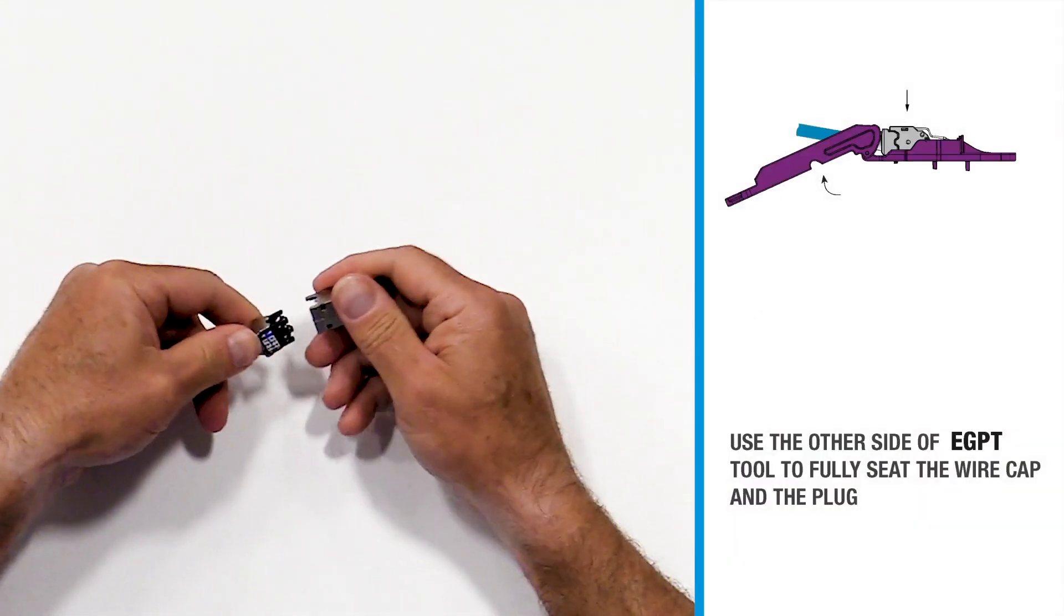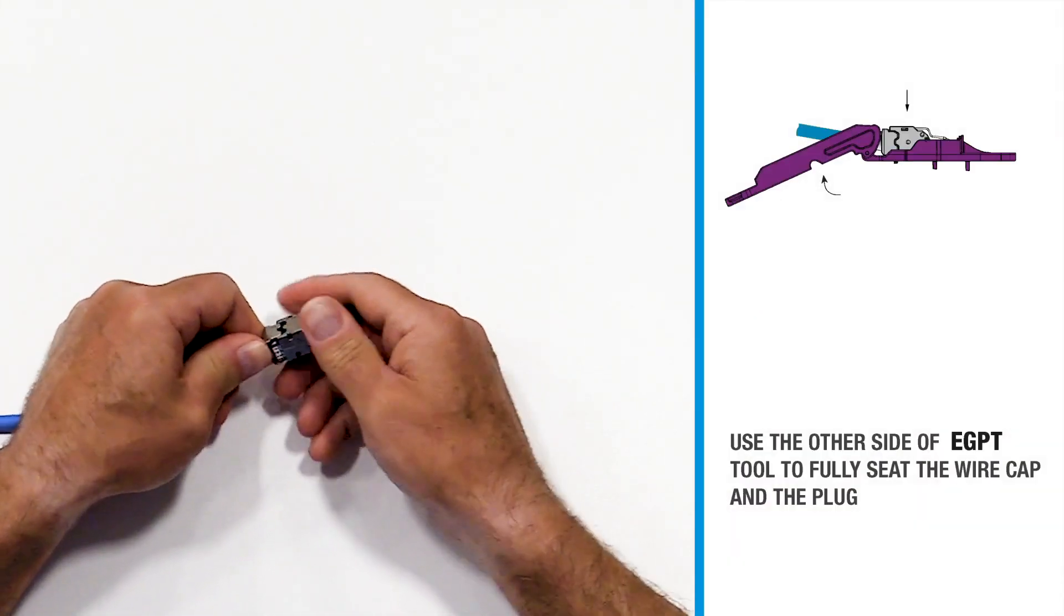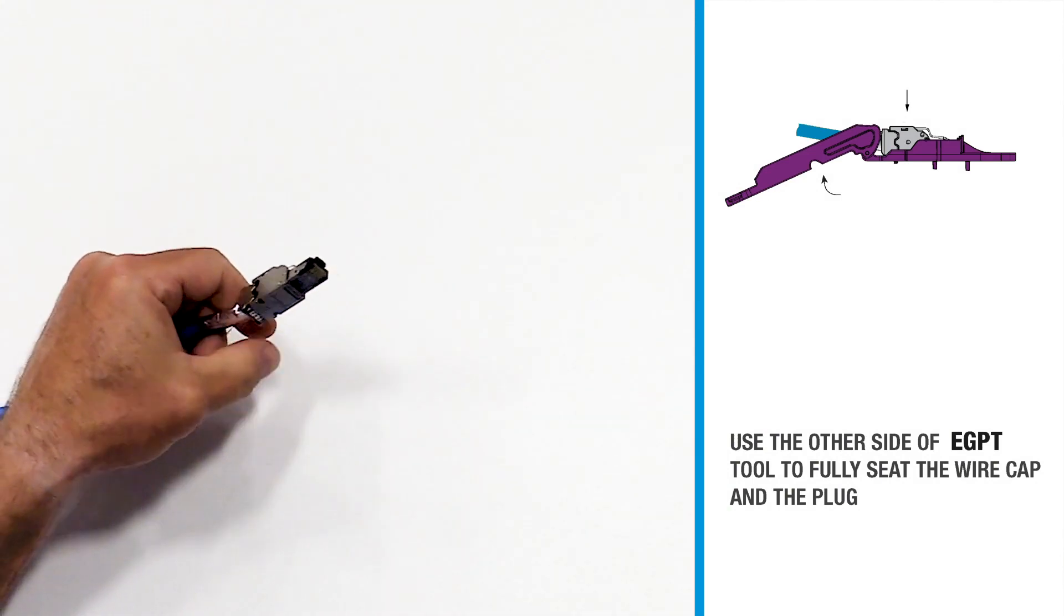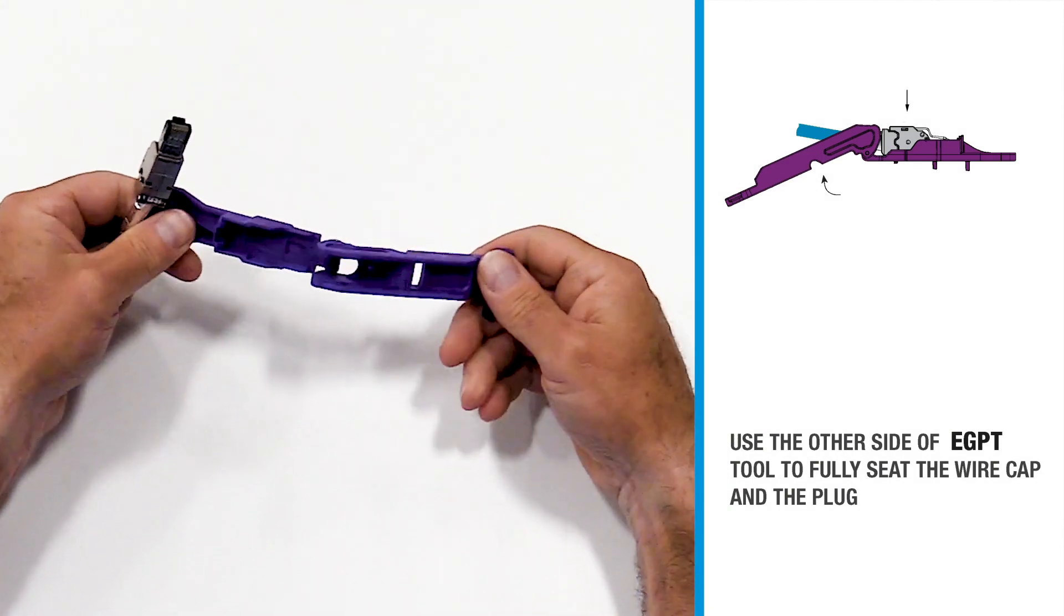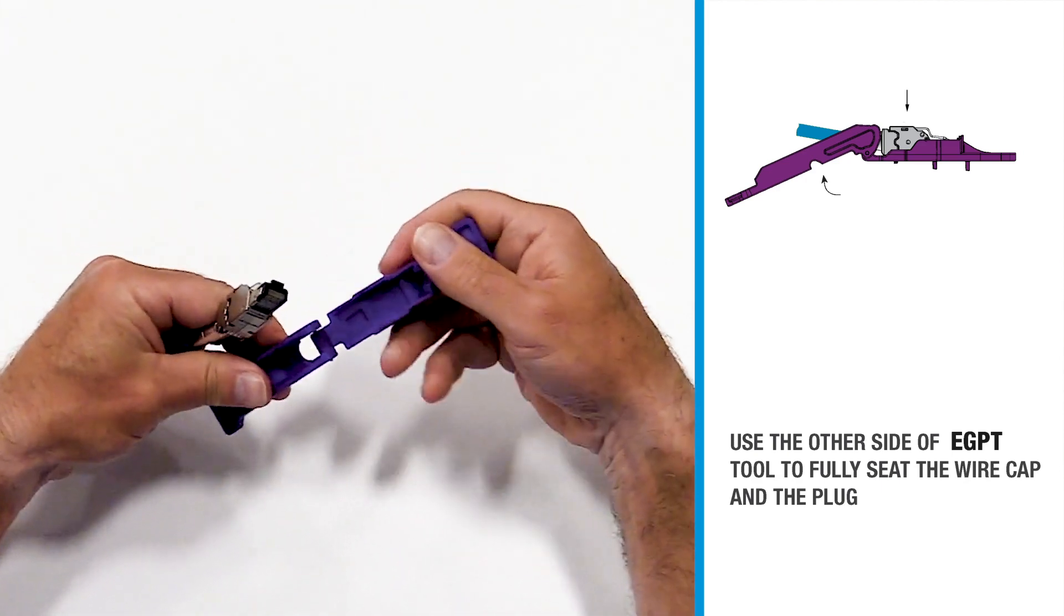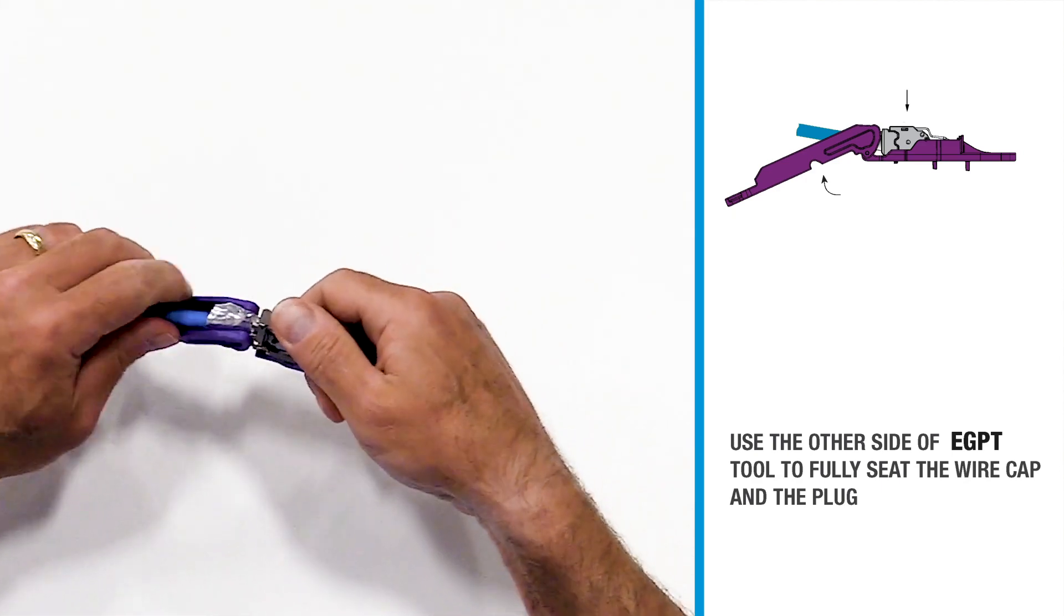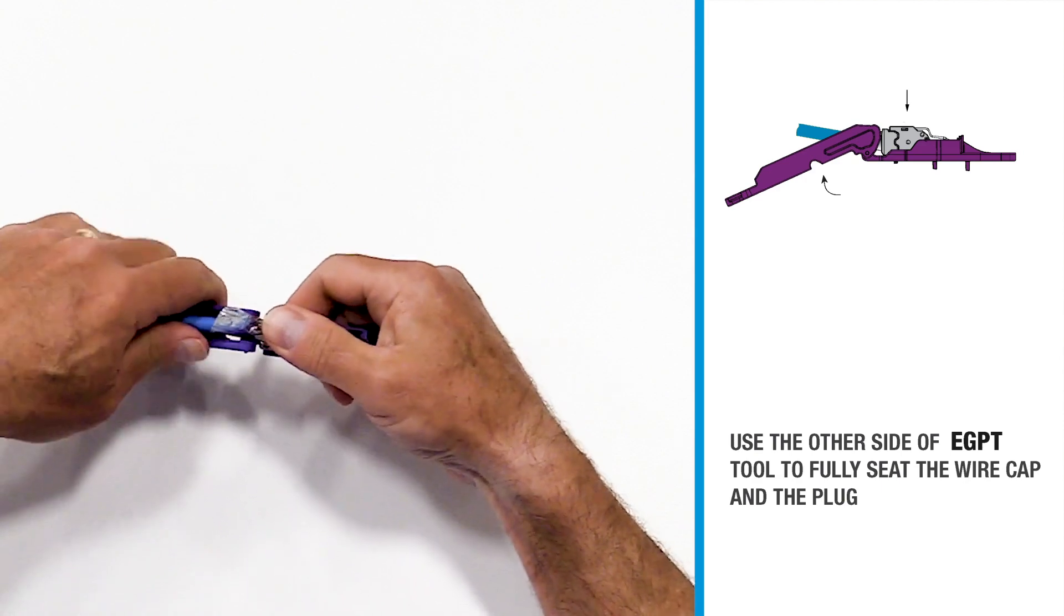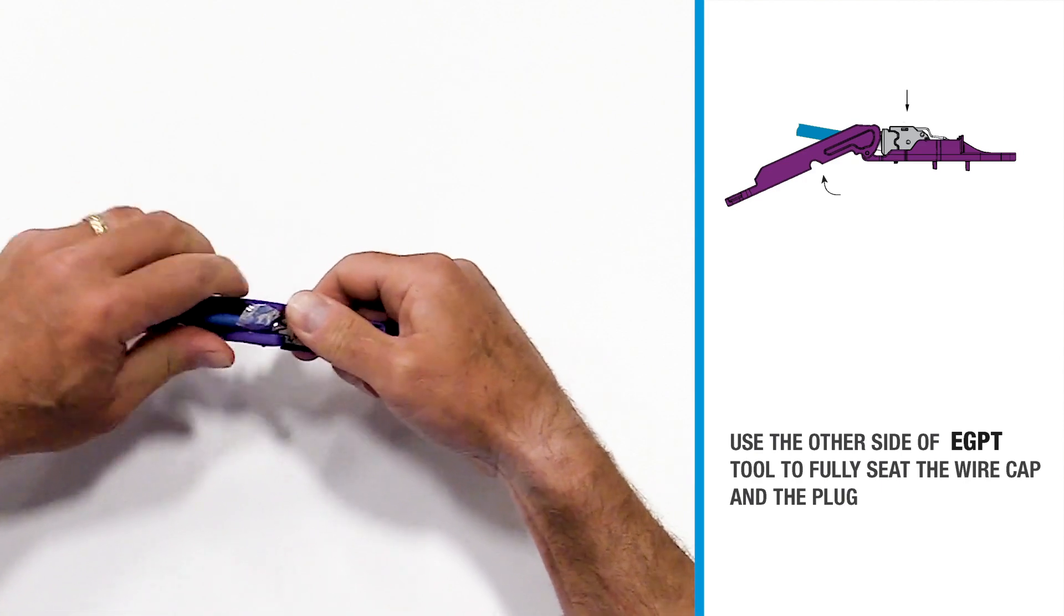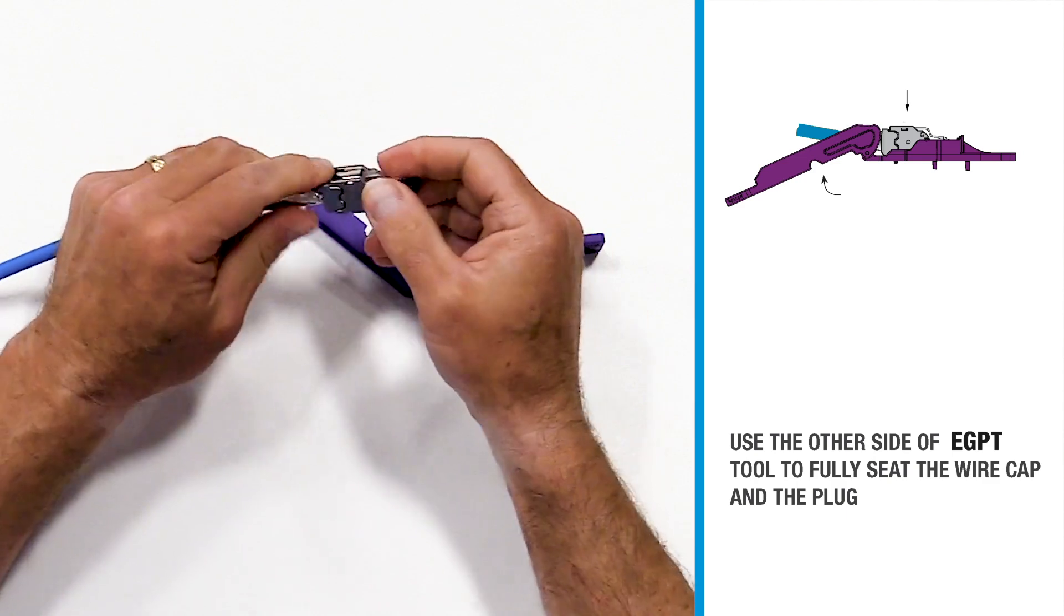Insert the wire cap finger tight, and then using the other side of the tool, we place the plug inside the tool and snap it shut. This fully seats the wire cap and the plug.